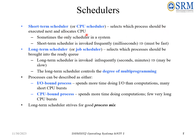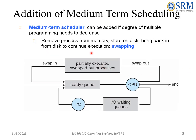A process can be described as either an I/O-bound process or a CPU-bound process. If a process spends more time during an I/O operation than computation, we term it as an I/O-bound process. If it is a CPU-bound process, it spends more time during computation than during the input/output operation.